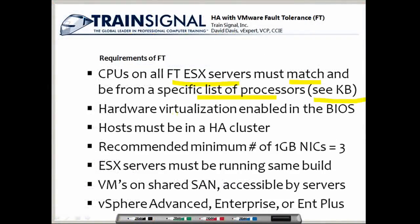The second requirement is that hardware virtualization must be enabled in the BIOS. All hosts providing fault tolerant services must be in an HA cluster. There's also a recommended minimum of three 1Gb Ethernet NICs on each server, to break out the fault tolerant logging traffic onto its own NIC — it's a soft requirement, but recommended for production. The ESX servers must be running the same build of vSphere, virtual machines must be on shared SAN accessible by all servers, and you must be using vSphere Edition Advanced, Enterprise, or Enterprise Plus.